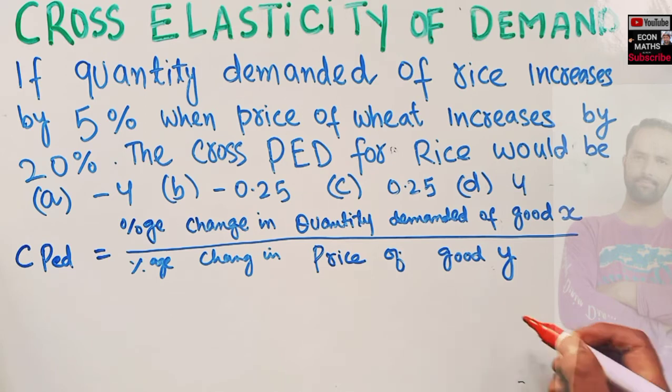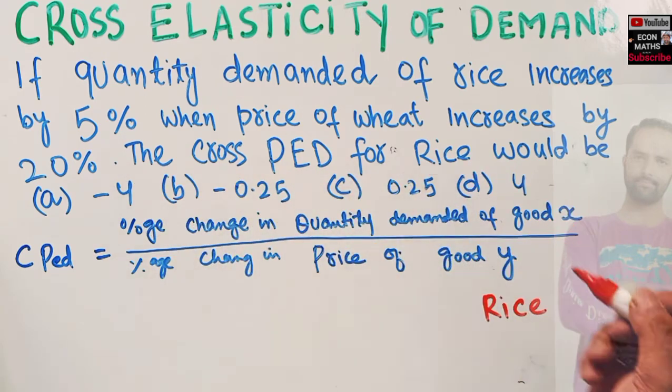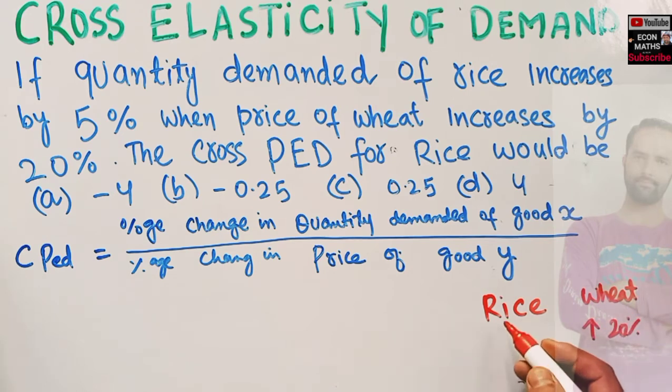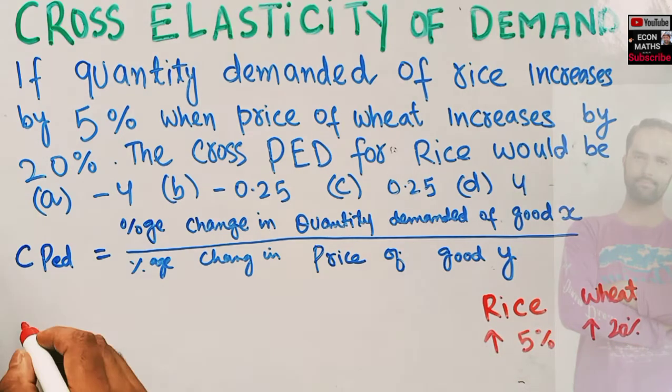We have two goods here: rice and wheat. We are told that when the price of wheat increases by 20%, quantity demanded of rice increases by 5%.